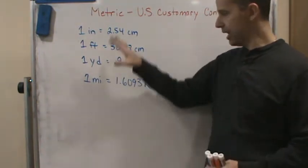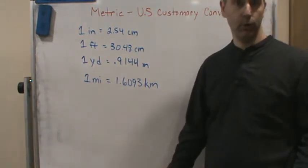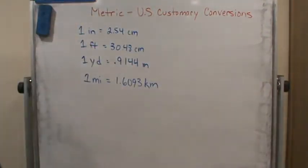We just have more conversion factors that we have to know and be able to use. So now, these are for distance. Let's say we want to convert 4.3 yards to meters.